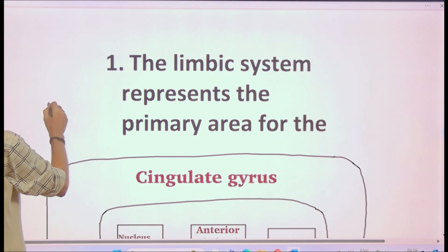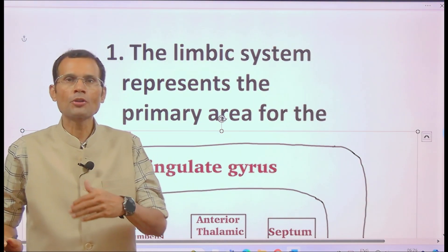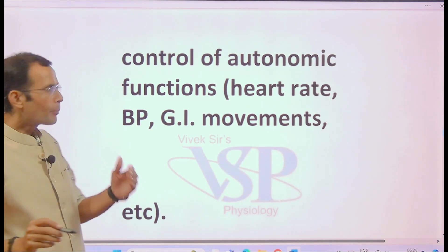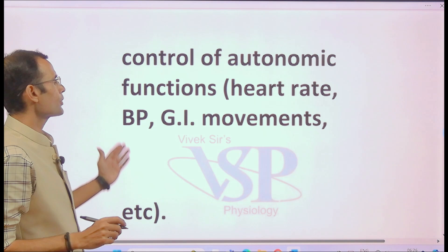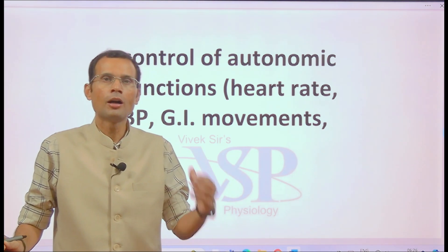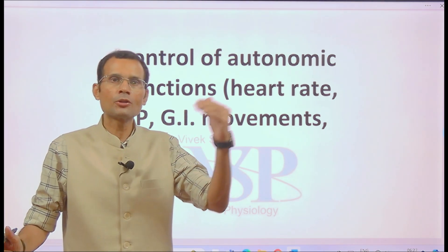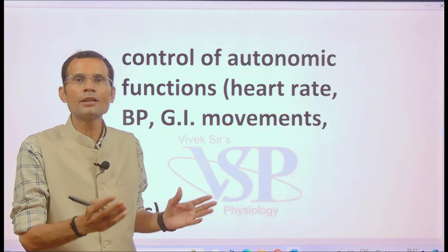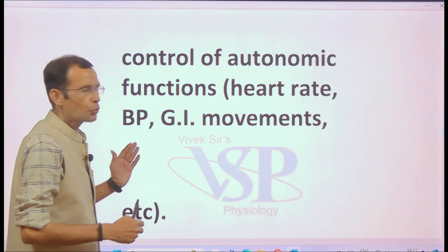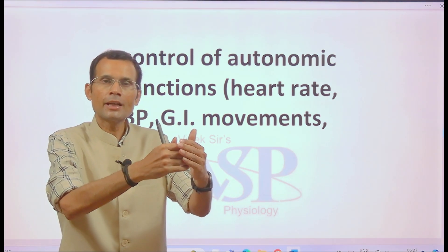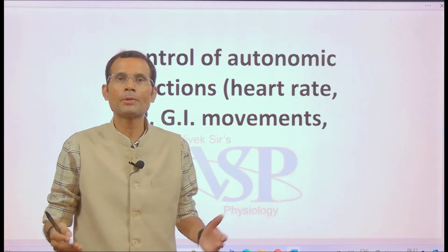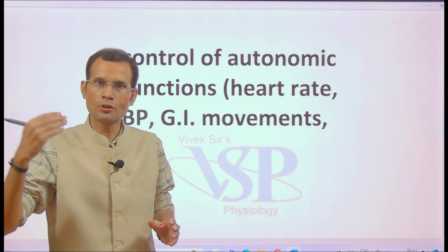The limbic system is the primary area for control of autonomic functions like heart rate, blood pressure, and GI movements. The hypothalamus is the highest seat of control for the ANS and is extensively connected with limbic system structures. Emotions controlled by the limbic system connect via the hypothalamus, which then controls the ANS and thereby heart rate, GI movements, blood pressure, etc.